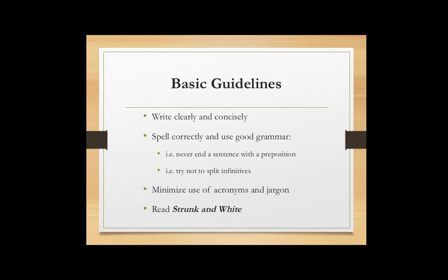For some basic guidelines from the editorial office: please write clearly and concisely — it's difficult to read papers that don't get to the point. Spell correctly and use proper grammar; this is a basic expectation and often a reason for rejection. Minimize the use of acronyms and jargon. If you introduce an acronym, please spell it out and explain what it stands for. Strunk and White is a great reference for these basic guidelines.